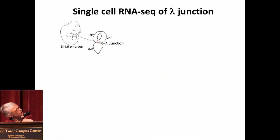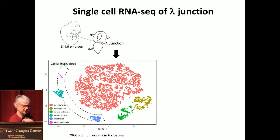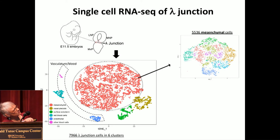The approach we took was a single-cell sequencing where we dissected tissues just from this lambdoid junction at E11.5, dissociated the cells, and did droplet-based sequencing. In a plot of all the different cells we have, where each dot represents the transcriptome of a specific cell, their spatial relationship is based on the similarity of transcriptomes. Within this we find cell populations of endothelial cells and blood cells, and then the cells we're particularly interested in — the mesenchymal cells and the epithelial cells. We reclustered the mesenchymal cells and studied those, and then we also reclustered the ectodermal cells and studied those.